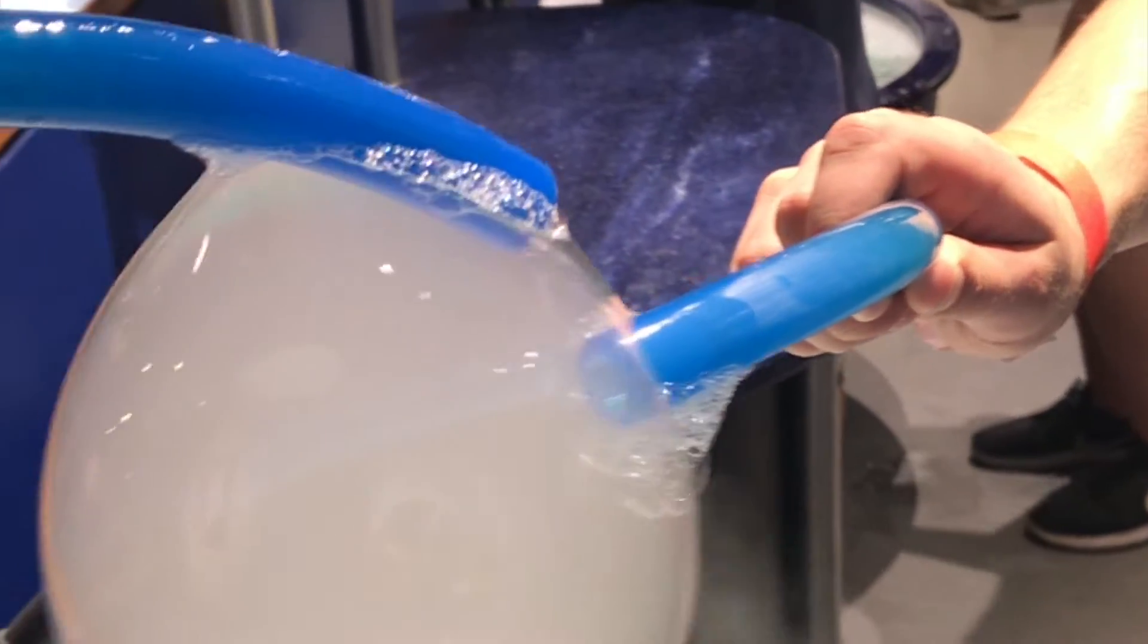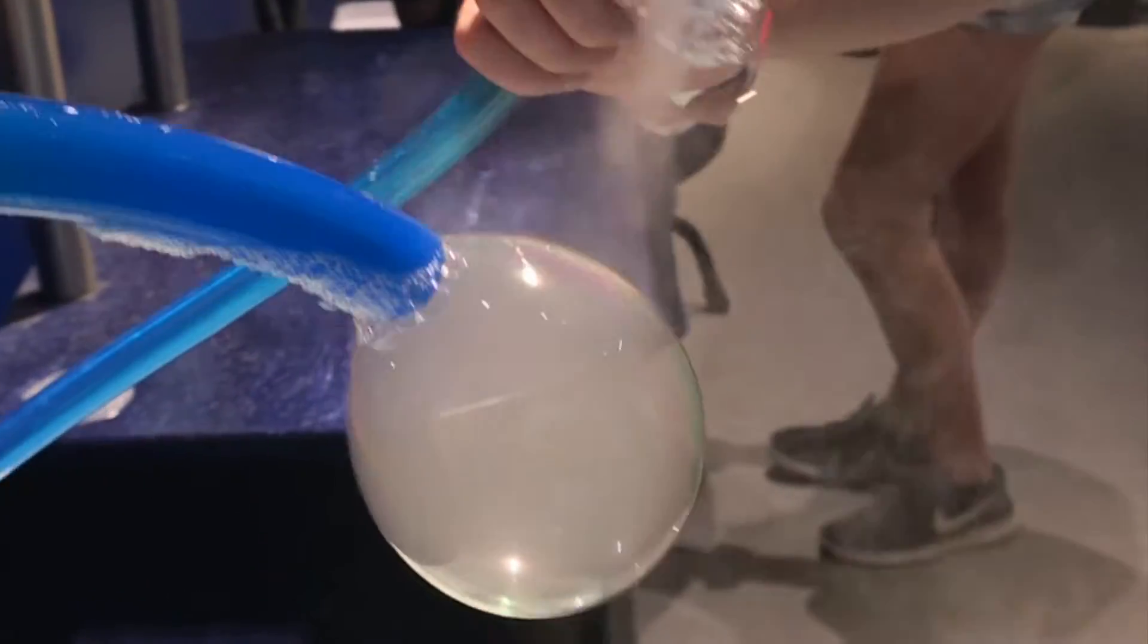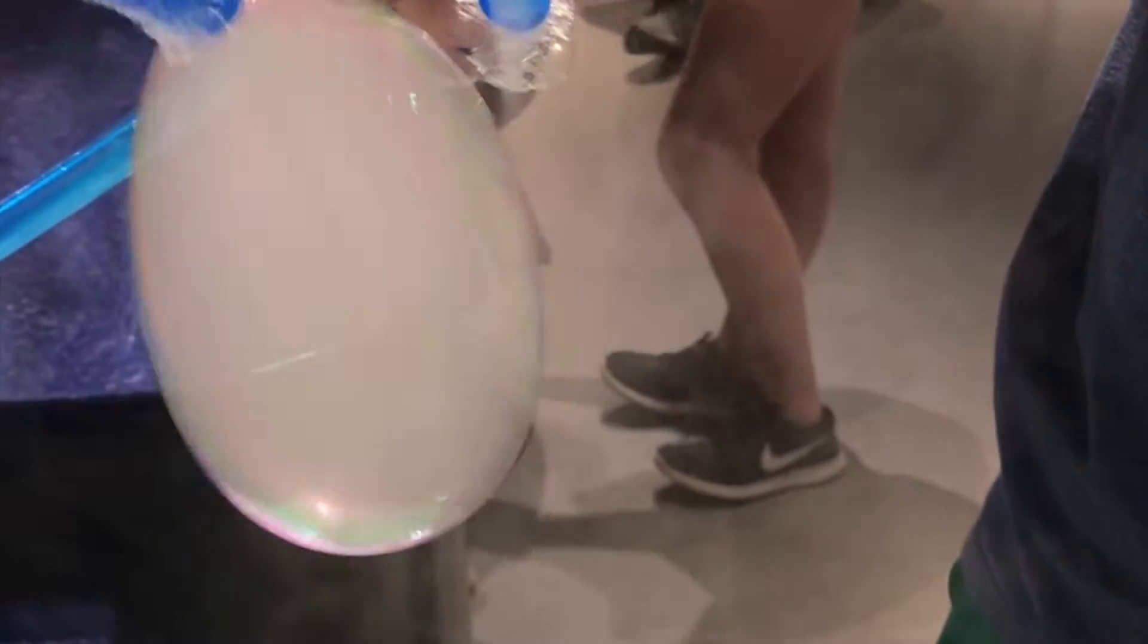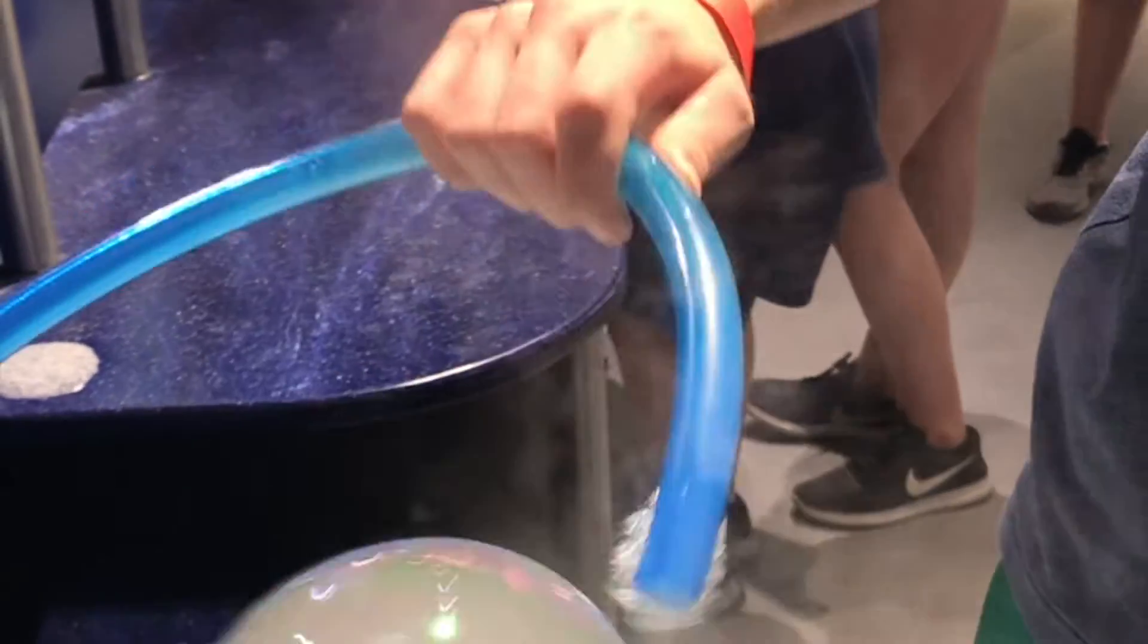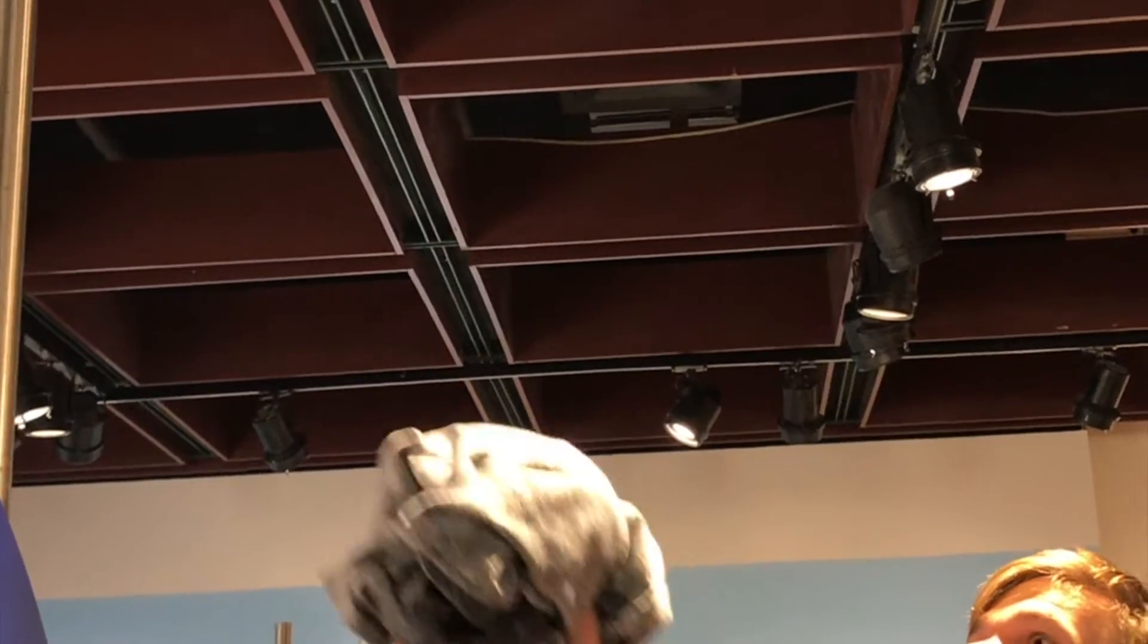When we started this project, we knew of other demonstrations that utilize balloons to demonstrate Charles' Law. Our motivation for using bubbles is that they have less elastic properties than balloons and that their volume is easier to approximate.